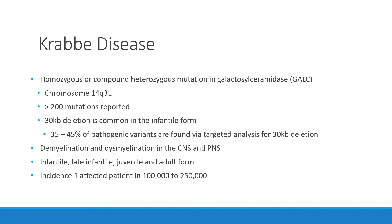To date there are more than 200 mutations reported. The 30 kilobase deletion continues to be a common mutation in the infantile form, with 35 to 45 percent of pathogenic variants found via targeted analysis of the 30 kilobase deletion. This disease causes demyelination and dysmyelination of both the brain and peripheral nervous system and can present with onset as infantile, late infantile, juvenile, and adult form.